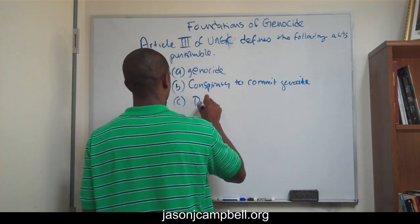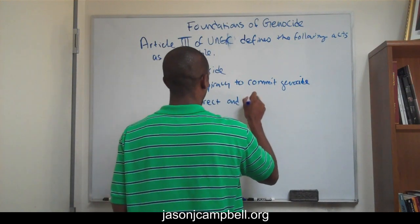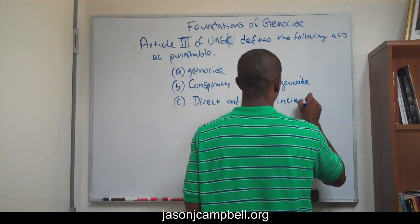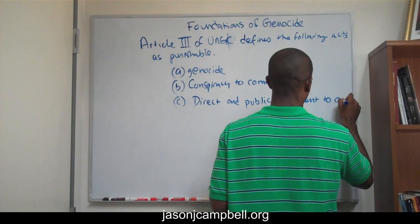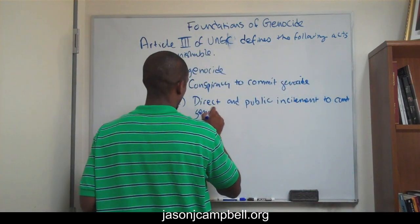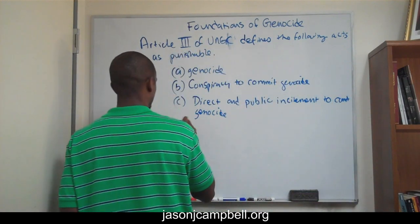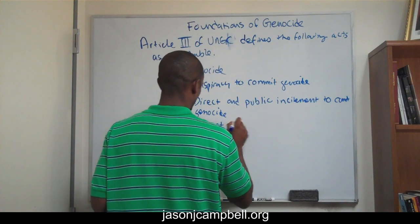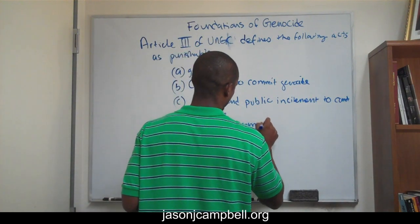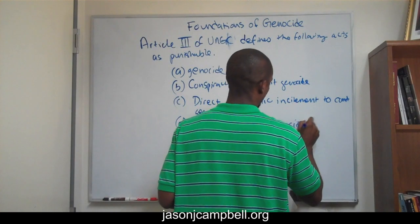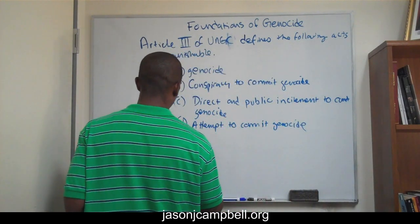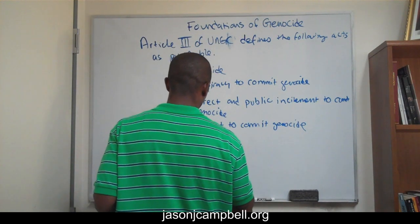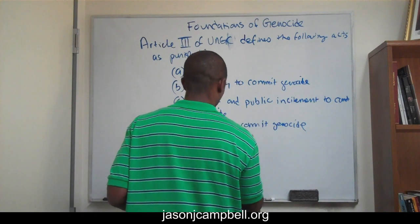Number two: B, conspiracy to commit genocide is punishable. Number three: C, direct and public incitement to commit genocide is punishable. D, number four: the attempt to commit genocide is punishable. And number five: E, complicity in genocide is punishable.